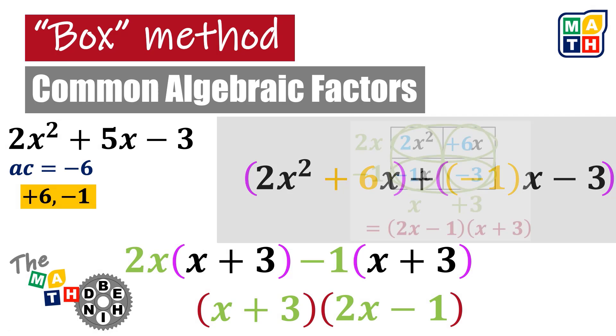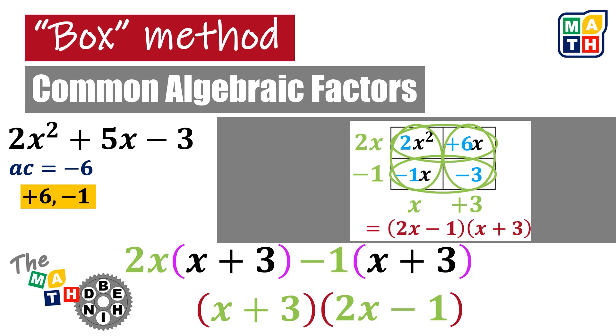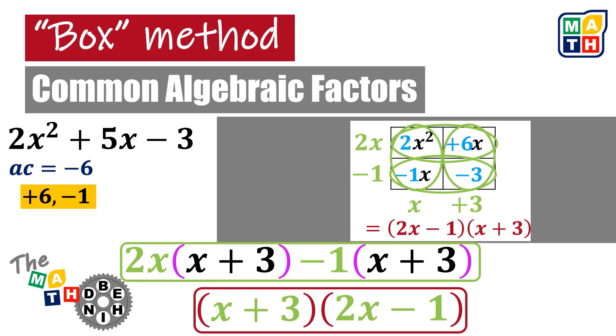If we cover the first part and compare to the result using the box method, we can see that in this group of terms, they are just the same factors that resulted from the box method. By factoring out (x plus 3), we get the same pair of binomial expressions. They are just rearranged, but no worry because multiplication is commutative. The two binomials are simply the same factors from the box method.